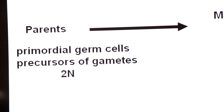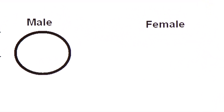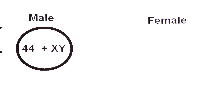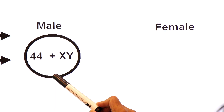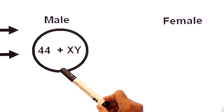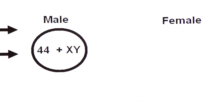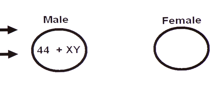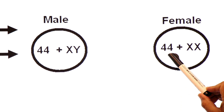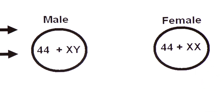Look at the primordial germ cell in male — it is called spermatogonium. Its karyotype has 44 autosomes and a pair of sex chromosomes XY. The primordial germ cell of female is called oogonium, with 44 autosomes and one pair of sex chromosomes XX.